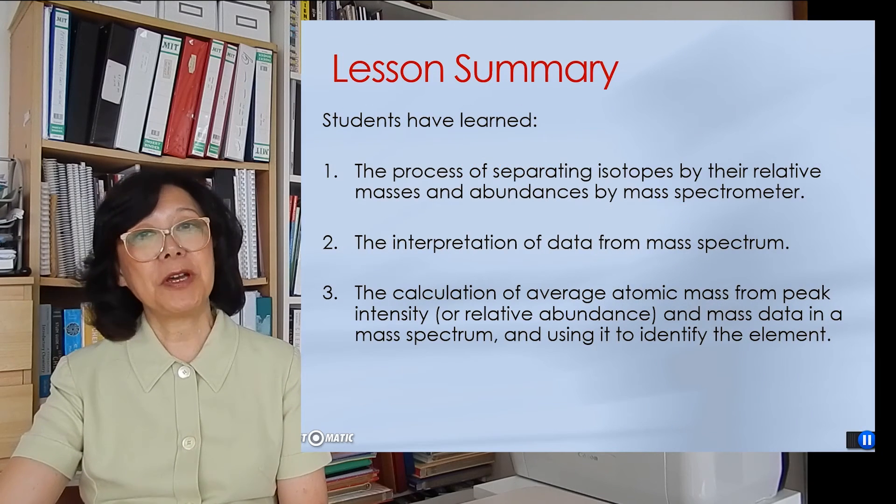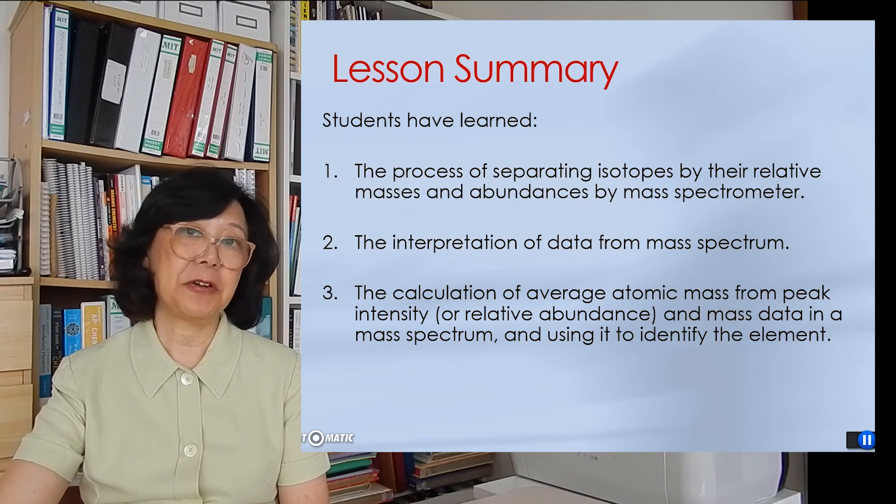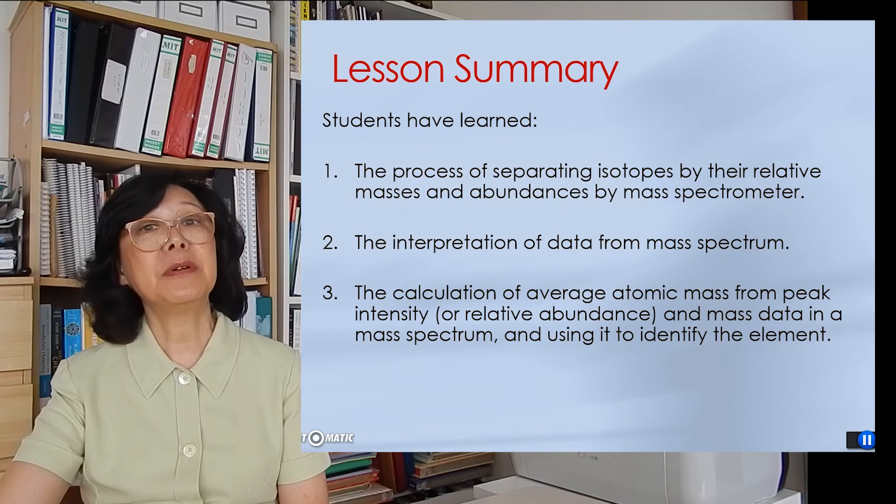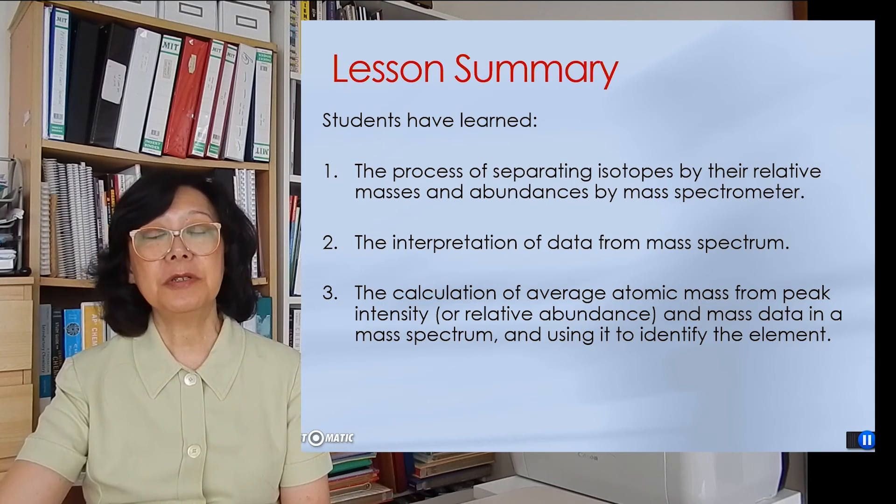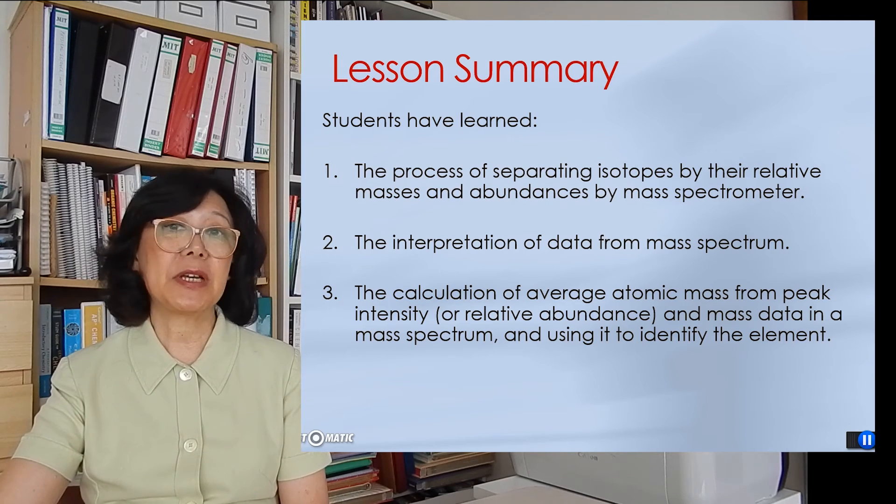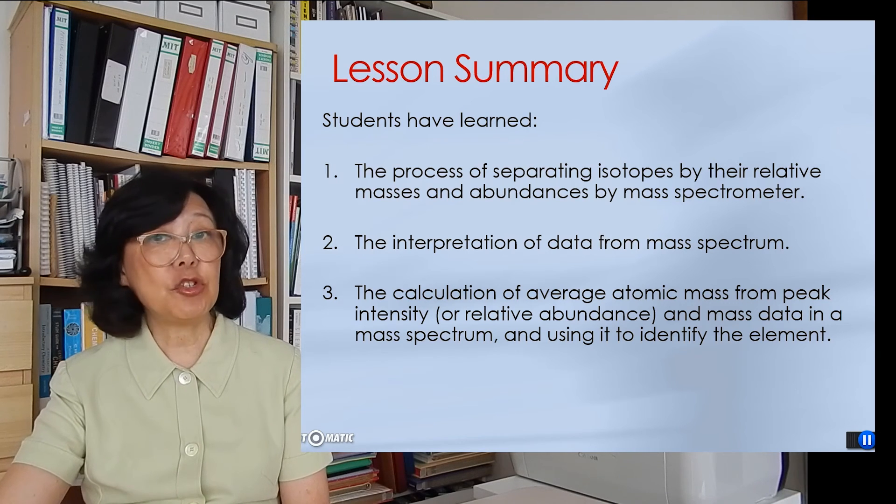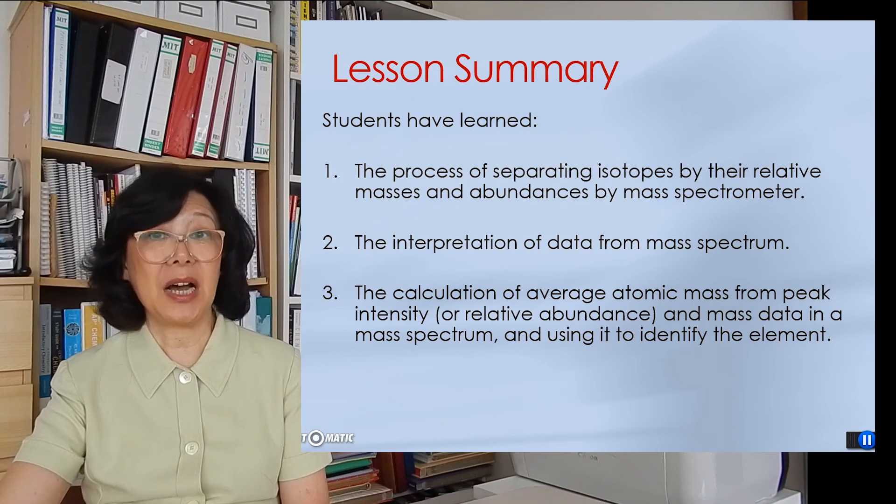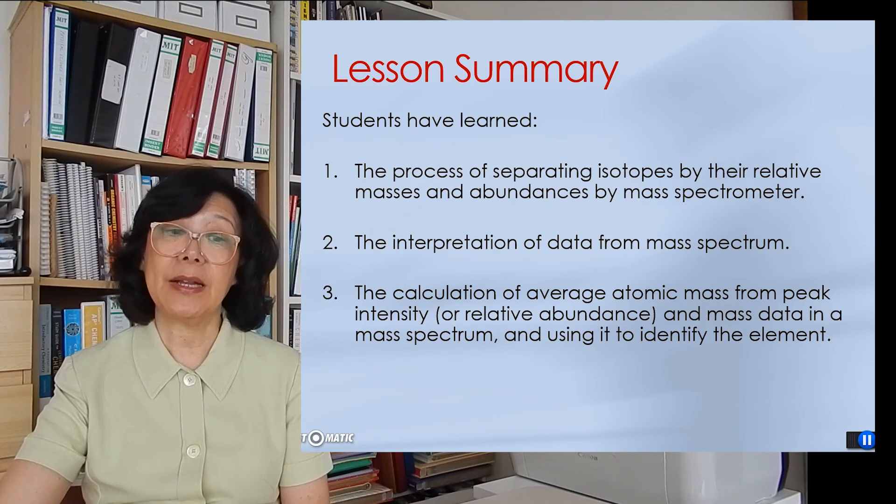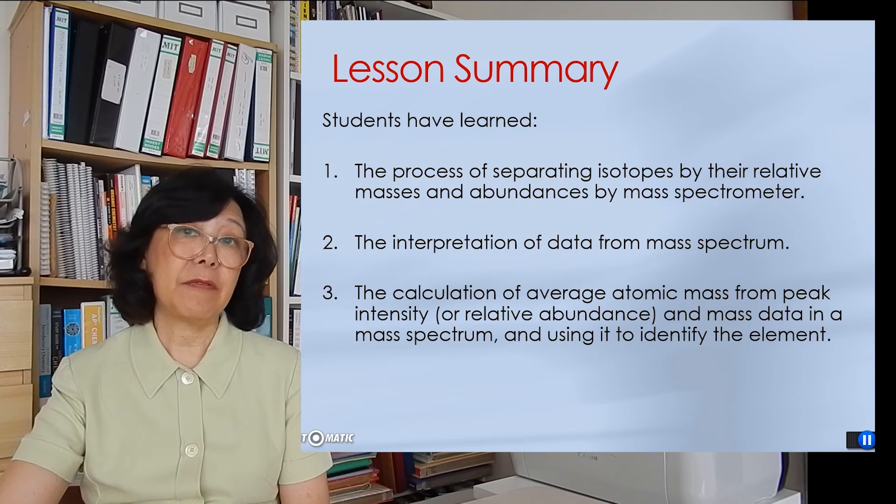So to sum up what we have learned today in our lesson: one, we have explored what is a mass spectrometer and how it works to separate isotopes by their relative masses. Two, we pick a mass spectrum and extract data from it, so that we can extract relative percent abundance and the atomic mass unit of each peak, which represents the isotope. And then we can calculate the average atomic mass unit of that element, and use it to identify the unknown.